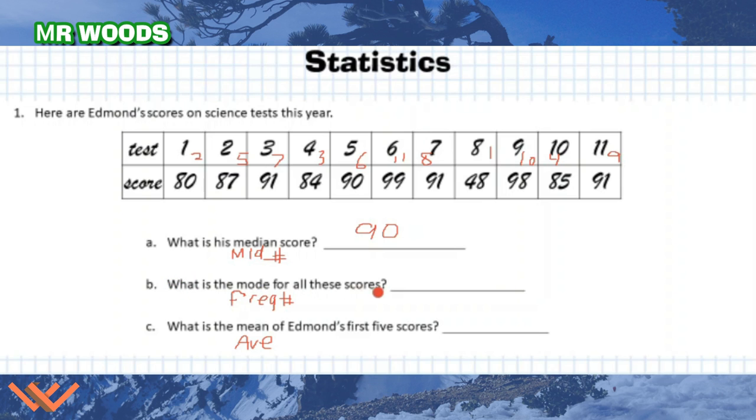What is the mode for all these scores? Well, it's the most frequent number. Well, let's take a look here. So I could say, let's see the most frequent number. This happens one time. 80 is one time. So that's just one. 85, one. 87 is one. Let's see. I have an 88. Nope. I have 90. Well, there's a one for 90. And anything else there? Nope. 91.